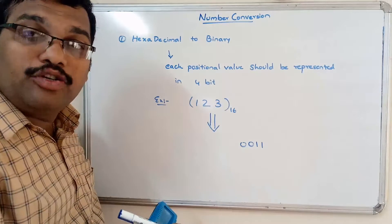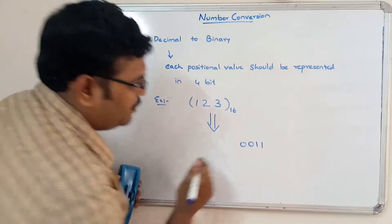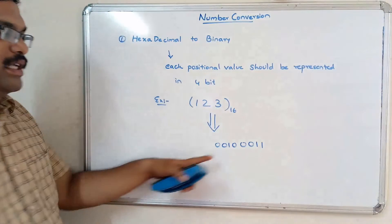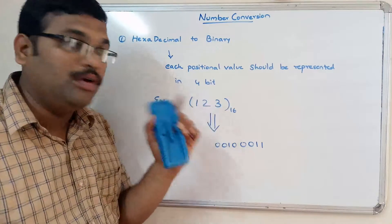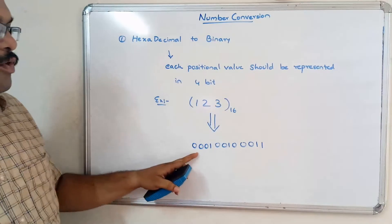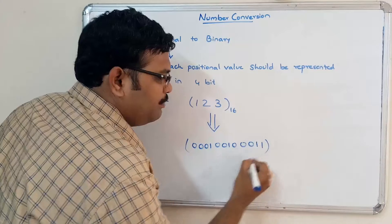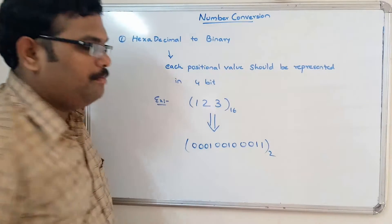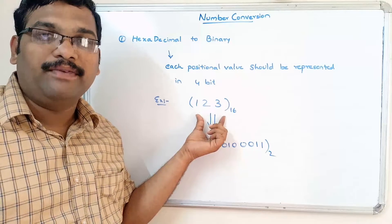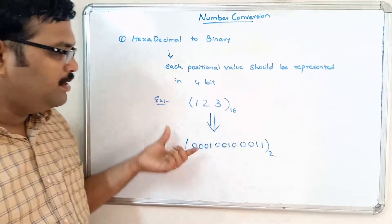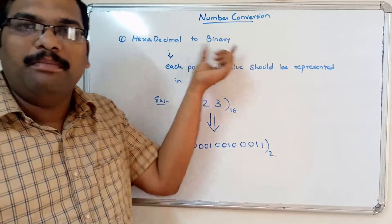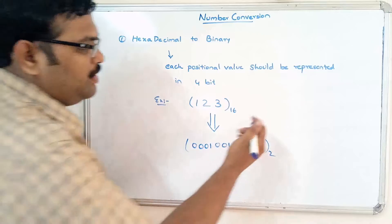Next consider 2. The 4-bit representation of 2 is 0010. Then consider 1. The 4-bit representation of 1 is 0001. So the binary equivalent of hexadecimal 123 is 000100100011. This is the simple way to convert any hexadecimal number to binary.